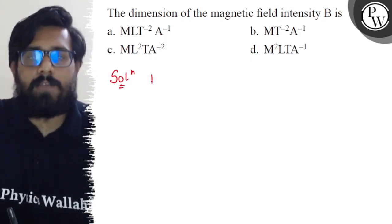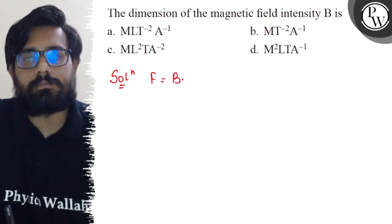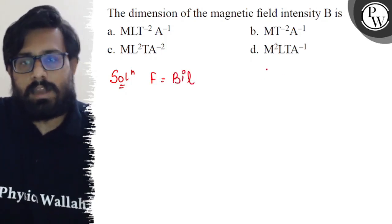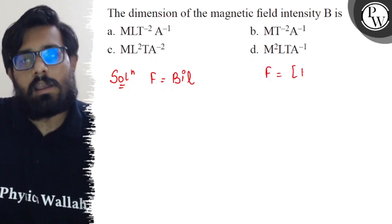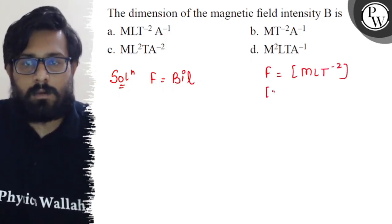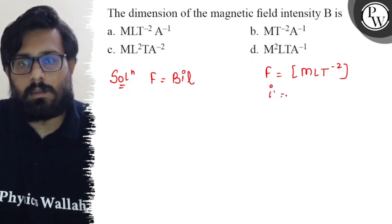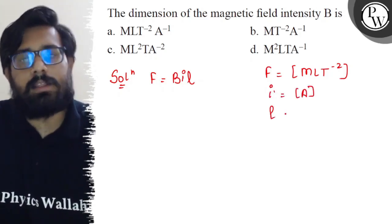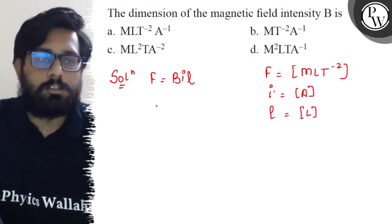So here in this question we know the relation that F equals BiL. We know the dimension for the force is MLT^-2, the dimension of current is ampere A, and the dimension of the length is L.